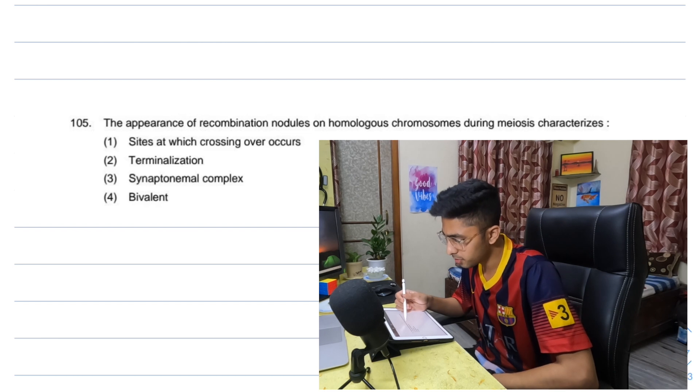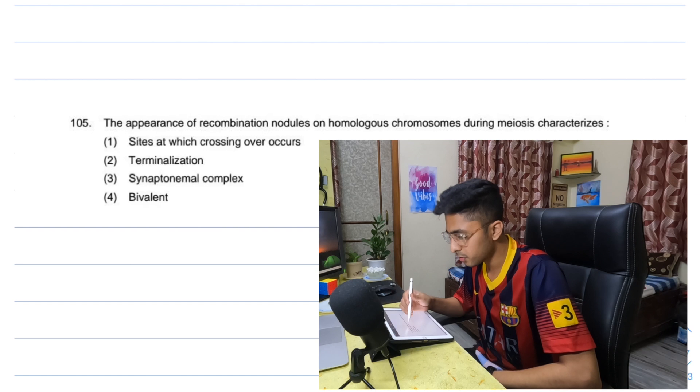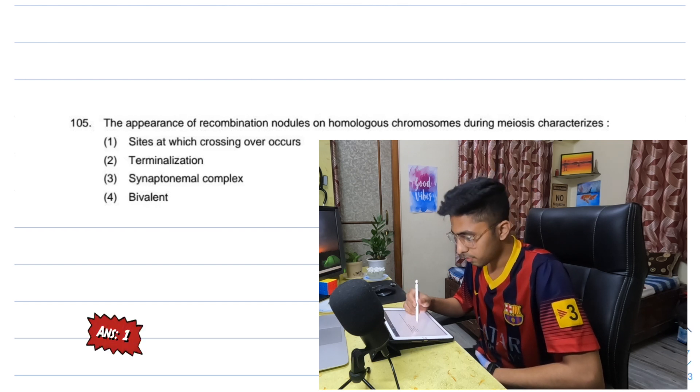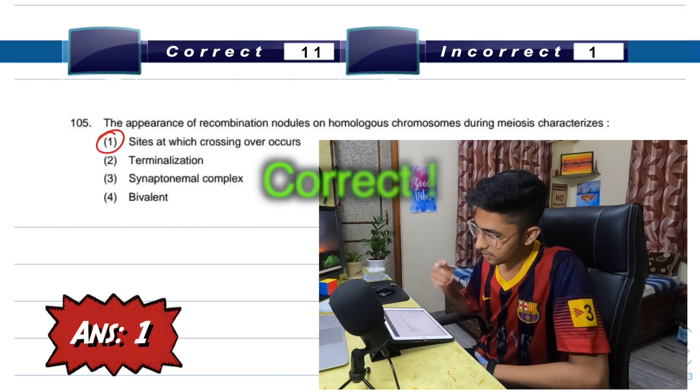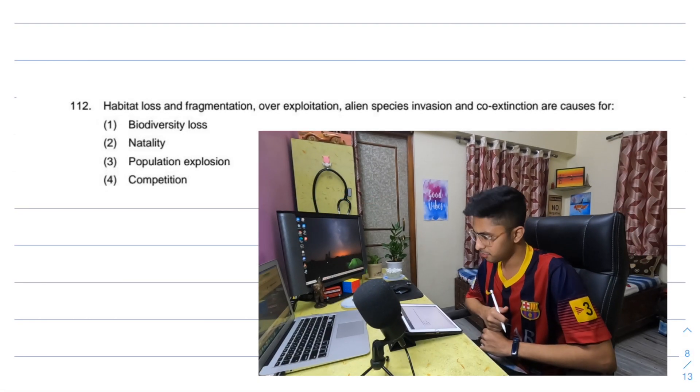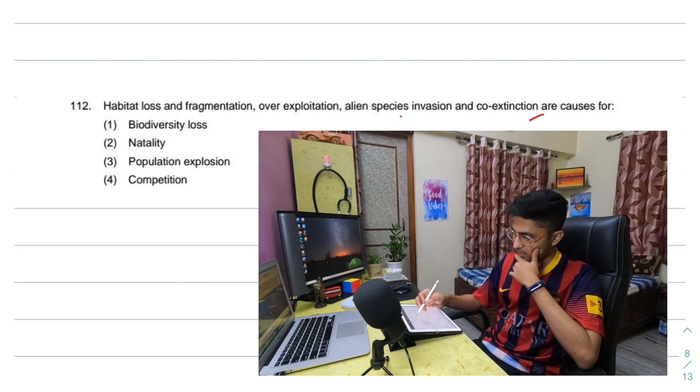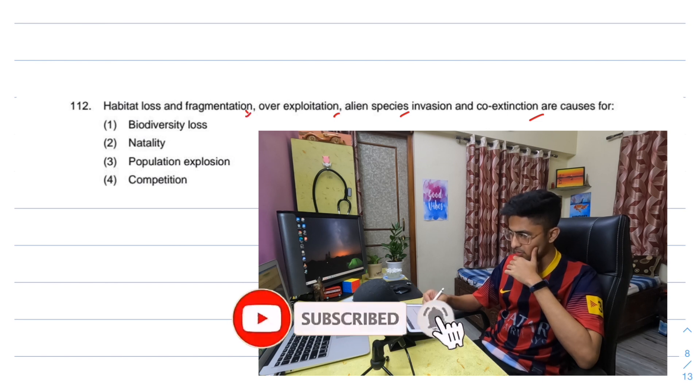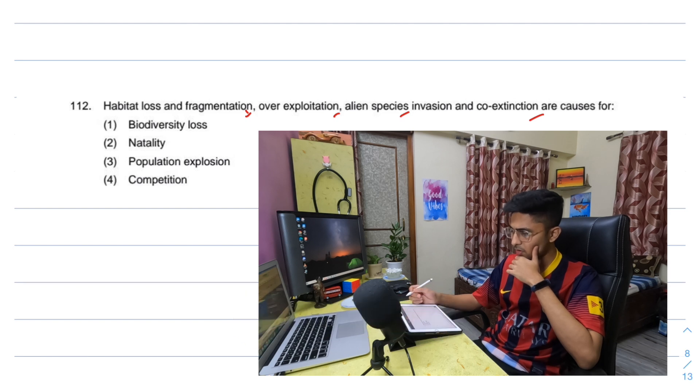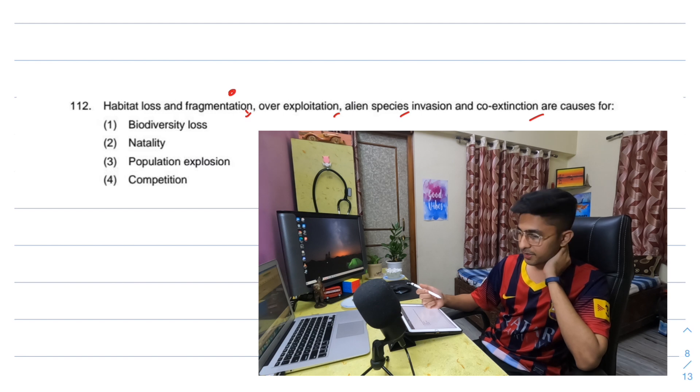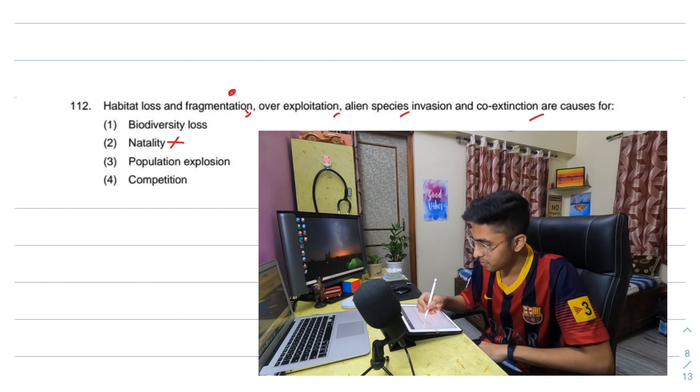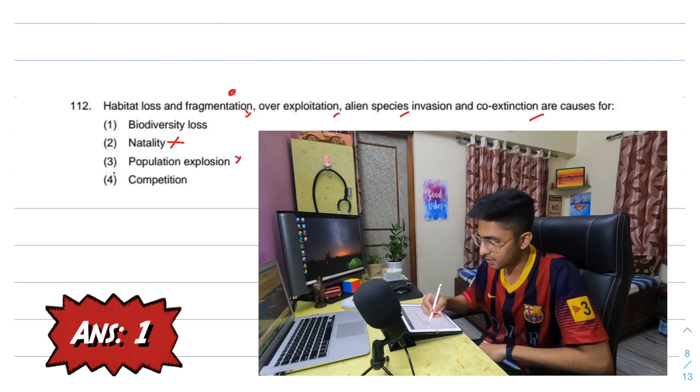Appearance of recombination nodules on the homologous chromosome during meiosis characterizes sites at which crossover - synaptonamal complex. Recombination nodules, recombination helps in crossing over. Habitat loss and fragmentation, overexploitation, alien species invasion, and coextinction are causes for - coextinction. Alien species will lead to competition. Everything is disruptive I guess. Biodiversity loss. But alien species probably will increase biodiversity. Total guesswork guys, not total guesswork. I don't know this term. I'll just go with competition for this one.